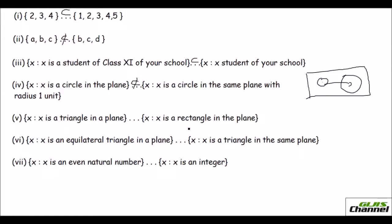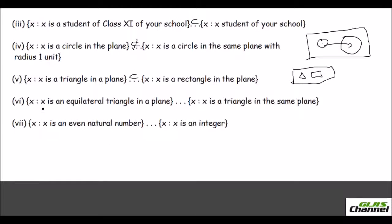Fifth: {X : X is a triangle in a plane} versus {X : X is a rectangle in a plane} — not a subset. A triangle and a rectangle are different shapes; you may have a triangle somewhere and a rectangle somewhere else — they are not subsets of each other. Sixth: {X : X is an equilateral triangle in a plane} versus {X : X is a triangle} — yes, it is a subset, because equilateral triangles are one type of triangle. Seventh: {X : X is an even natural number} versus {X : X is an integer} — yes, even natural numbers are included in the integers, so it is a subset.